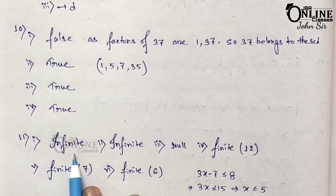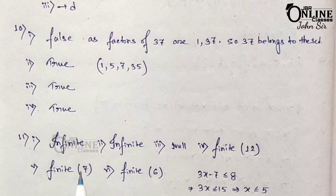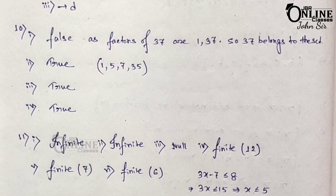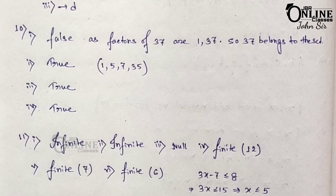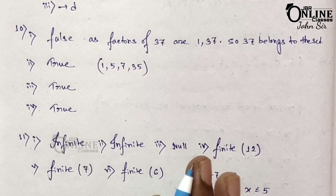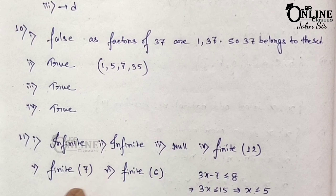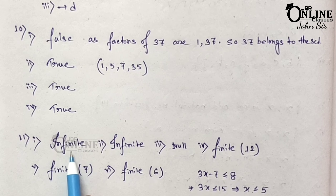X belongs to integers and x < 5. Integers less than 5 can be 4, 3, 2, 1, 0, minus 1, minus 2, and so on — there is no end. So it's an infinite set.